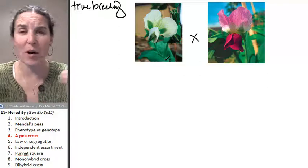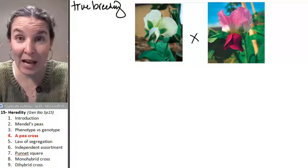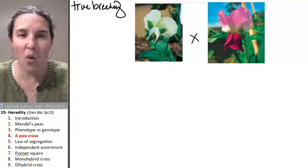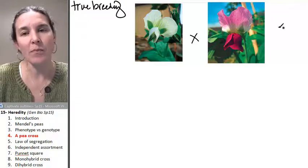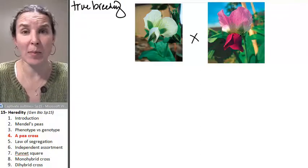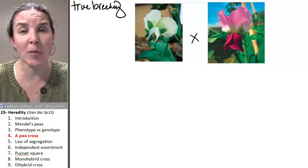And those baby white plants, no matter who they crossed with in that line of white plants, they always ended up with more baby white plants. Same thing with the purple plants. These were true breeding purple plants.